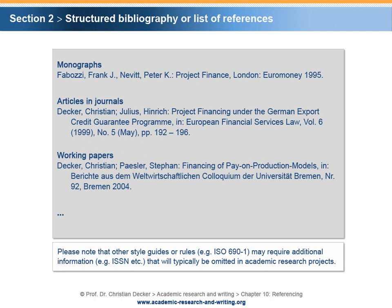Please note that other style guides or rules, for example ISO 691 of the International Organization for Standardization, may require additional information. For example, a book identification classifier such as ISSN, the International Standard Serial Number, that will typically be omitted in academic research projects.